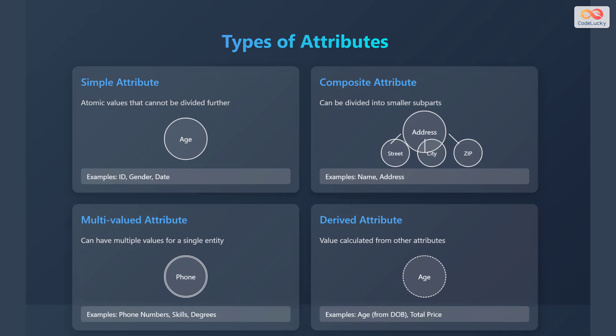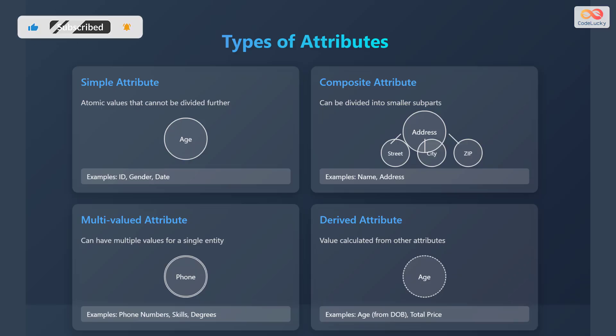A multi-valued attribute can have multiple values for a single entity, like phone numbers, skills, or degrees. Finally, a derived attribute's value is calculated from other attributes, like age derived from date of birth, or total price.